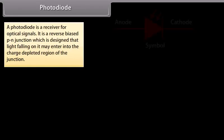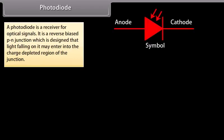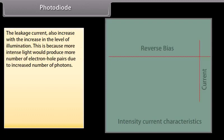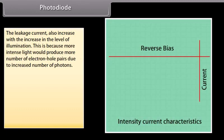Photodiode: A photodiode is a receiver for optical signals. It is a reverse biased P-N junction which is designed so that light falling on it may enter into the charge depleted region of the junction. When the diode is in the dark, a small current known as reverse saturation current or leakage current flows in the circuit. This current is due to the drift of electron-hole pairs thermally generated in the charge depleted region.